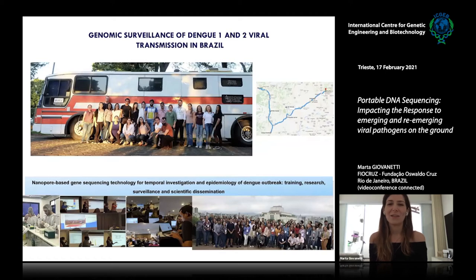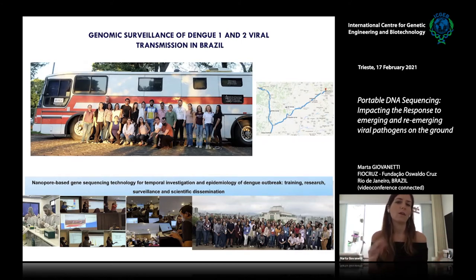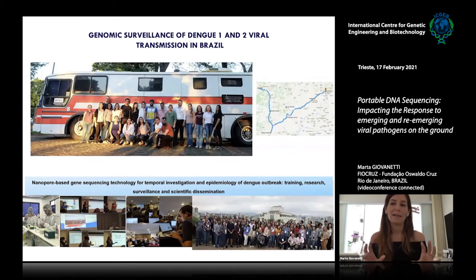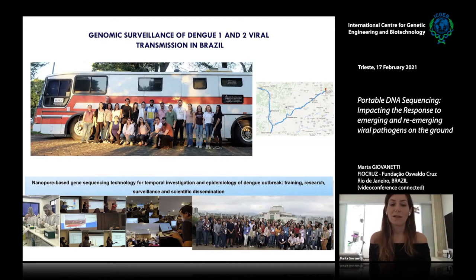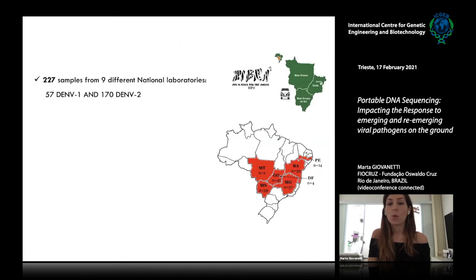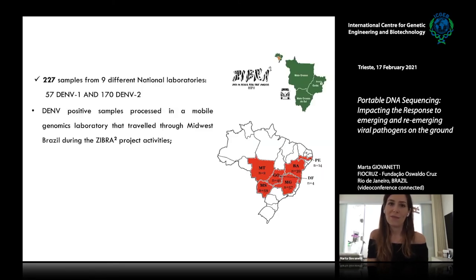In 2019, Brazil experienced a huge dengue outbreak, with co-circulation of dengue 1 and dengue 2 in 2018. We realized a combined strategy using a mobile lab motorhome traveling through Midwest Brazil, along with a training course in Belo Horizonte, capital of Minas Gerais. We generated 227 complete genome sequences from dengue 1 and dengue 2 from those two activities.